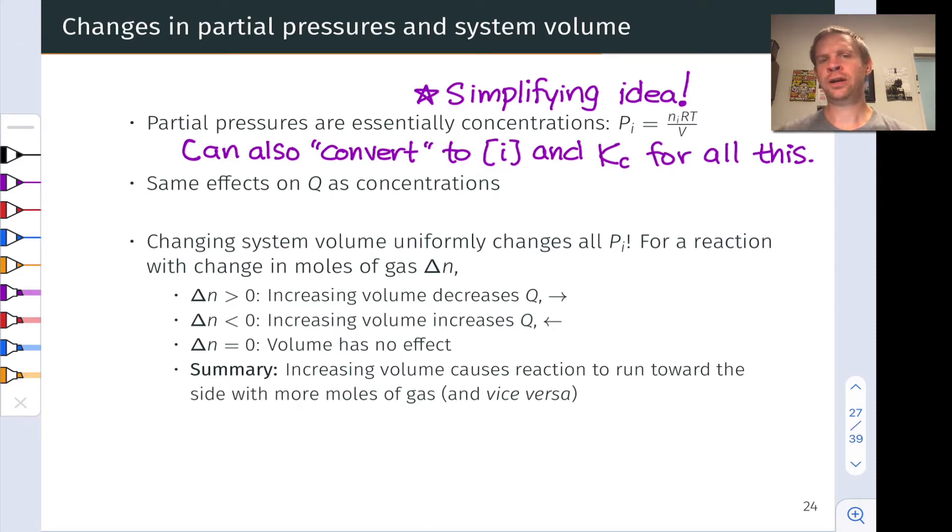Now, what about a change in volume for a gaseous reaction? Well the key idea here is that changing the system volume uniformly changes all the partial pressures. If I increase the volume of the system, all the partial pressures of the reactants and products go down uniformly, assuming temperature is remaining constant.